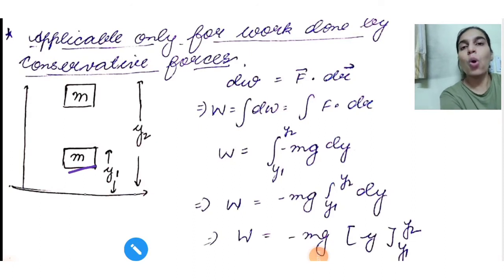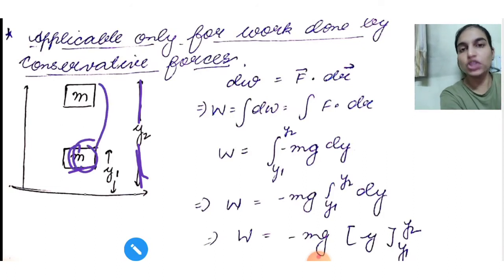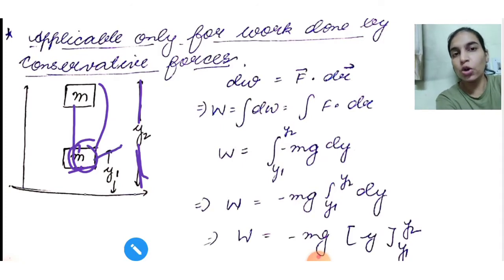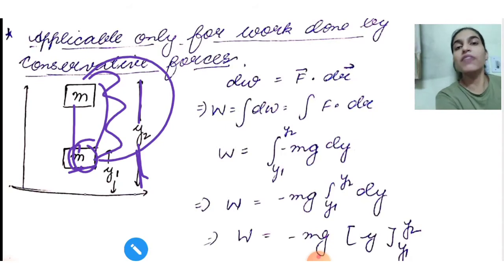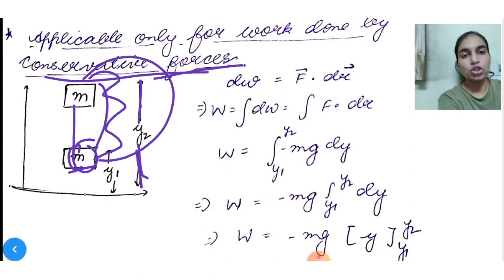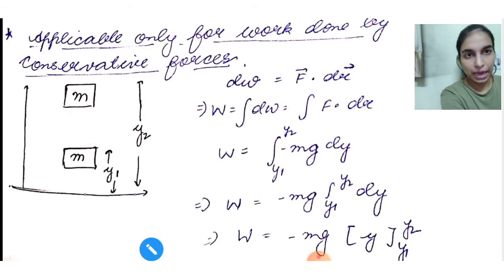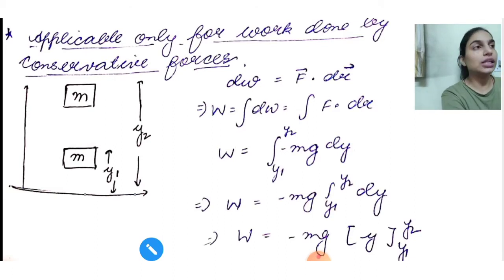Suppose a mass M is at position Y1 and we do work to take it to position Y2, measuring height from the ground. You can follow any path — straight or curved — and the work done will be the same because gravity is a conservative force. To calculate the work done, since the force is not constant along an arbitrary path, we use calculus: dW = F · dR for a small displacement.